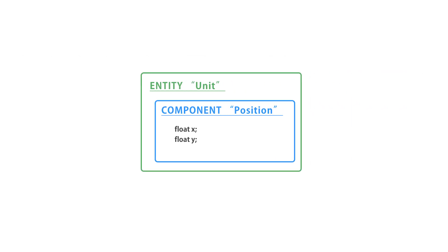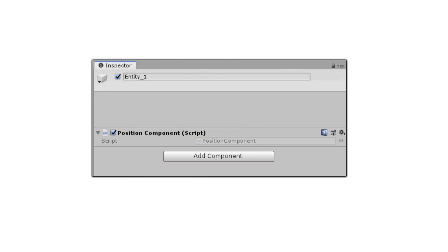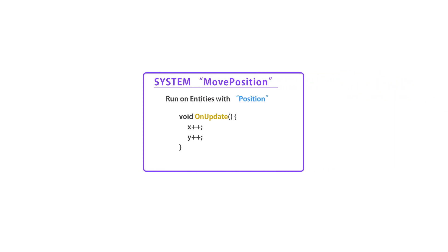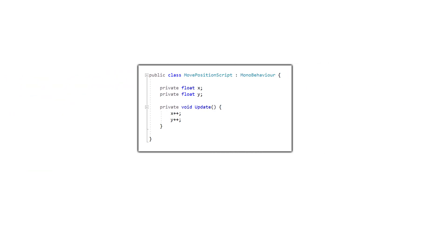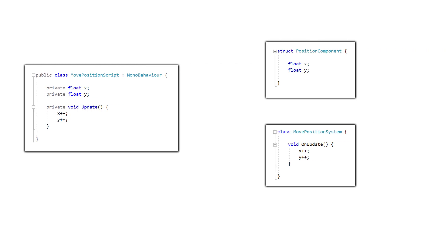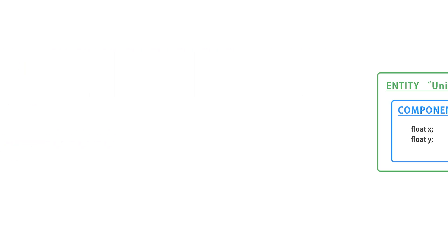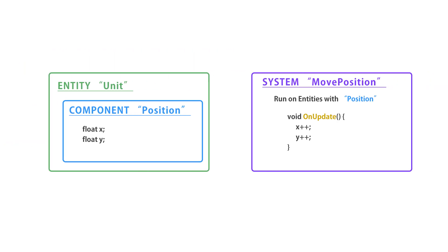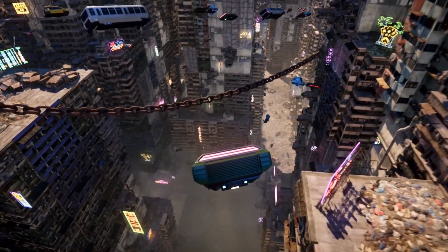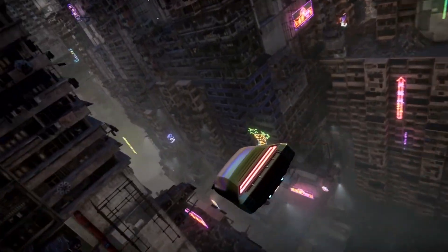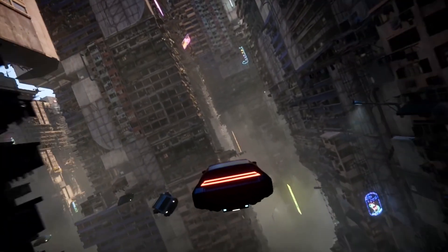Components are held by entities and contain the data — just like in the normal way you have components attached to each game object, in ECS you have components attached to each entity. The main difference is the systems, which act upon the component data. In the normal way, your MonoBehaviour scripts hold the data in variables and also have functions to modify that data. In ECS, they are cleanly separated: an entity refers to a specific instance of components, the components hold data, and the systems modify that data. Following the ECS pattern also makes it easier to write code that can be jobified by the Job System — which again means excellent performance.